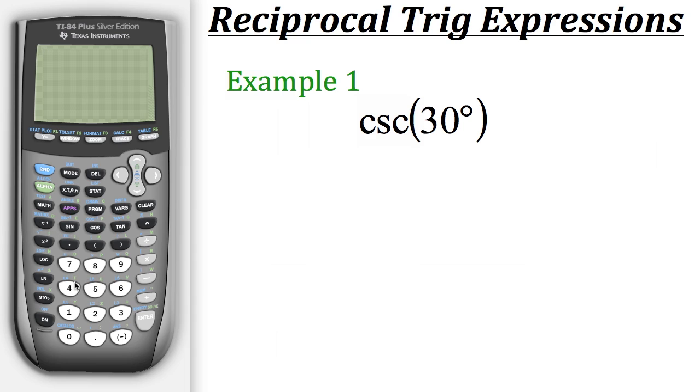We'll have to utilize its reciprocal function, which is sine. We can rewrite this expression as 1 over the sine of 30 degrees, because 1 over sine of 30 degrees is the same thing as cosecant of 30 degrees. Now let's evaluate it. We'll first type in 1 and then divide by the sine of 30 degrees.